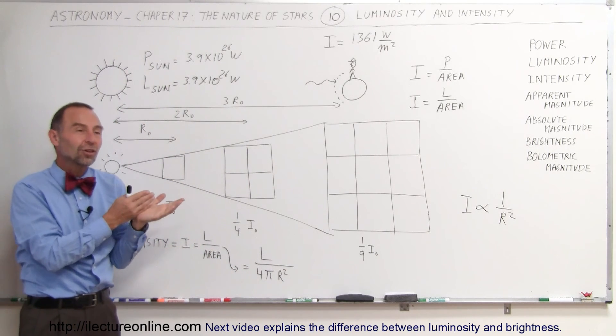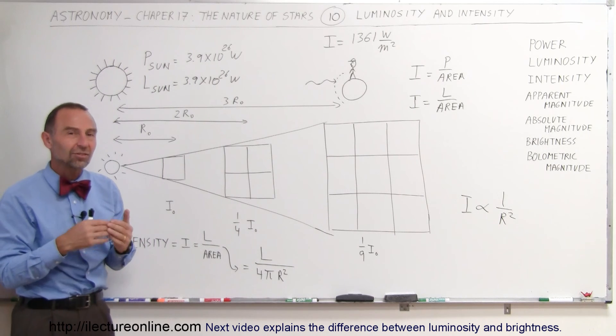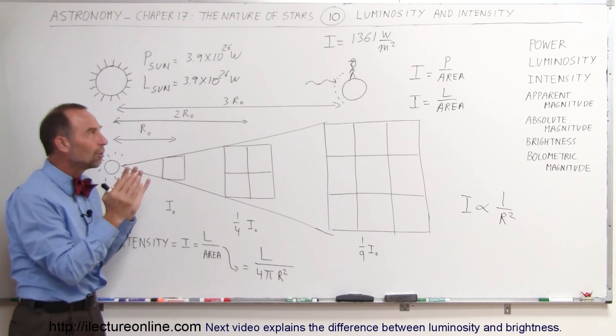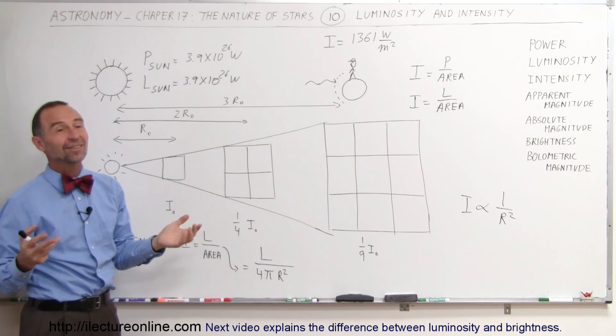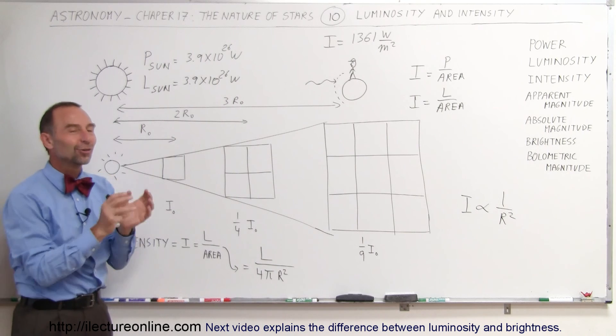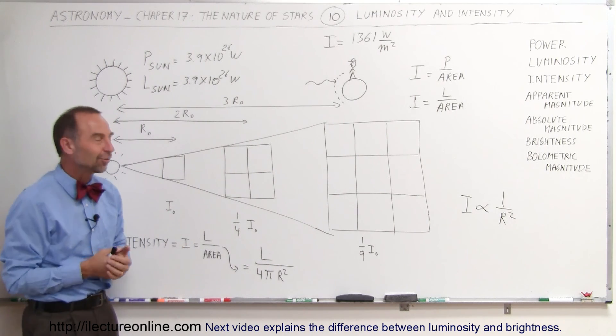You might have seen different values. The original value was more around 1366 or 1367, but with new measurements and calibration, we've narrowed it down where we feel that this is the more correct number. Again, in science, it's never quite absolute. There's always some variation depending upon the measurements and the ability to actually measure these particular values.